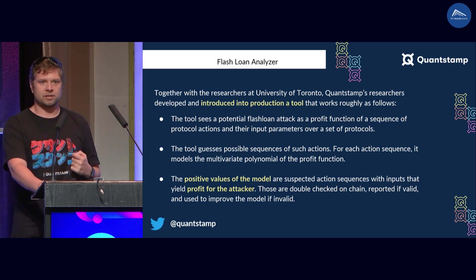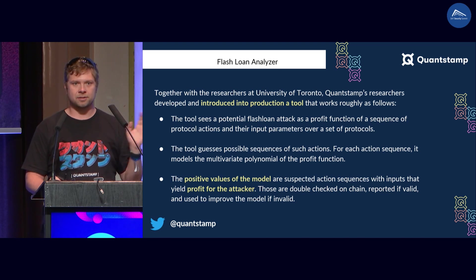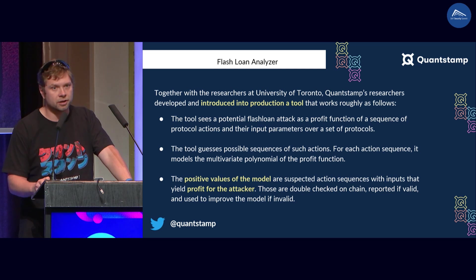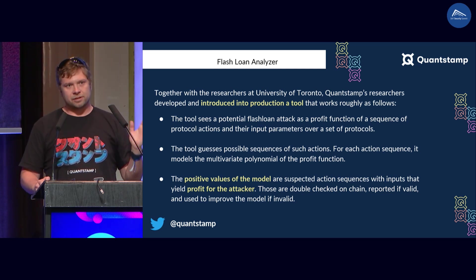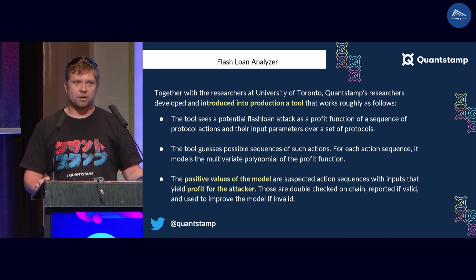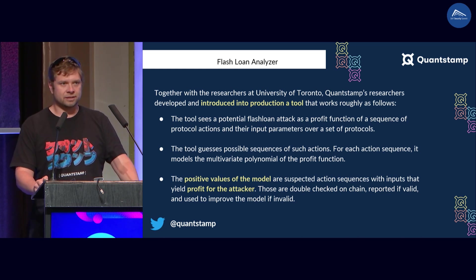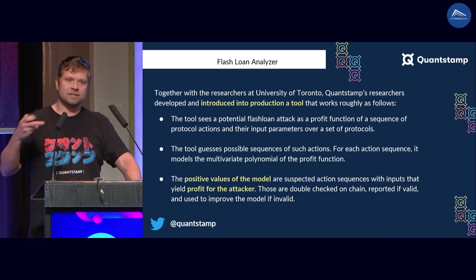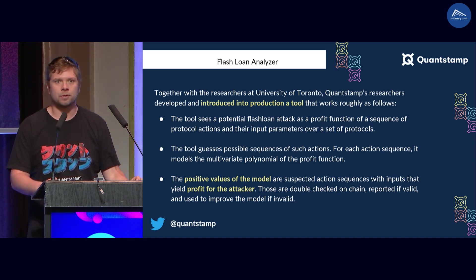We look at the local maxima that give us positive profit. Once we find something with positive profit, we take those parameters and the specific sequence of actions and execute it in a simulated chain environment — for example, a fork of the blockchain on Foundry or Hardhat. If this confirms that the sequence actually executes and yields profit, we have automatically synthesized a full attack vector that would exploit the given protocol. If it reverts or the profit is negative, we have obtained another function point to feed back into our model.